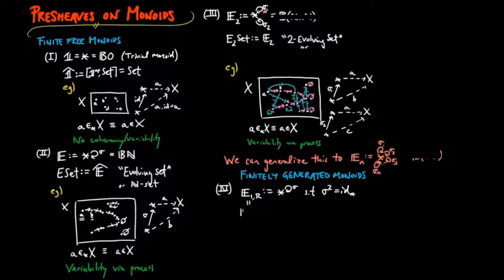Or in other words, it is the monoid N over 2N. The category of pre-sheaves on E1R will be called the category of involution sets, and that's because for a container X, which has a set of figures, the sigma-1 process is invertible by itself.